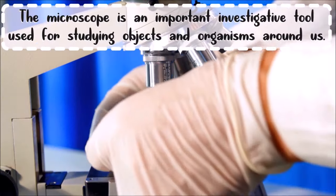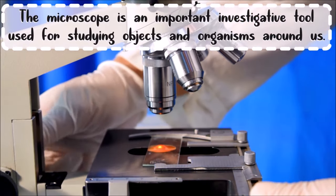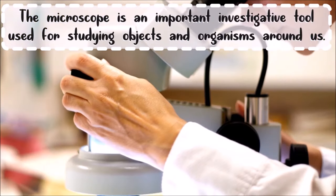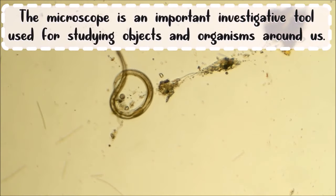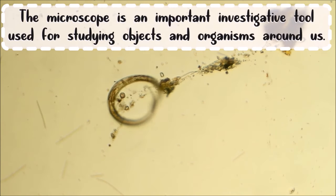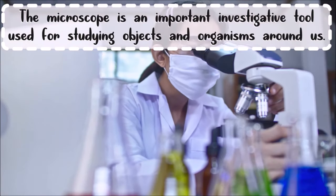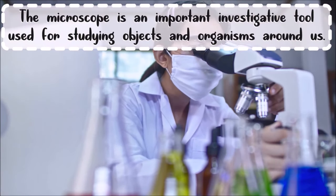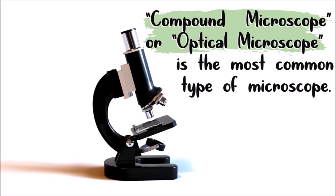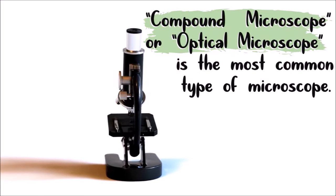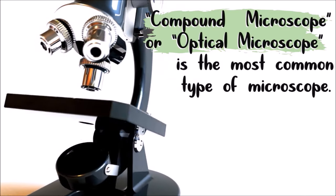The microscope is an important investigative tool used for studying objects and organisms around us. Microorganisms like bacteria can be observed through the use of microscope. Compound microscope or optical microscope is the most common type of microscope.